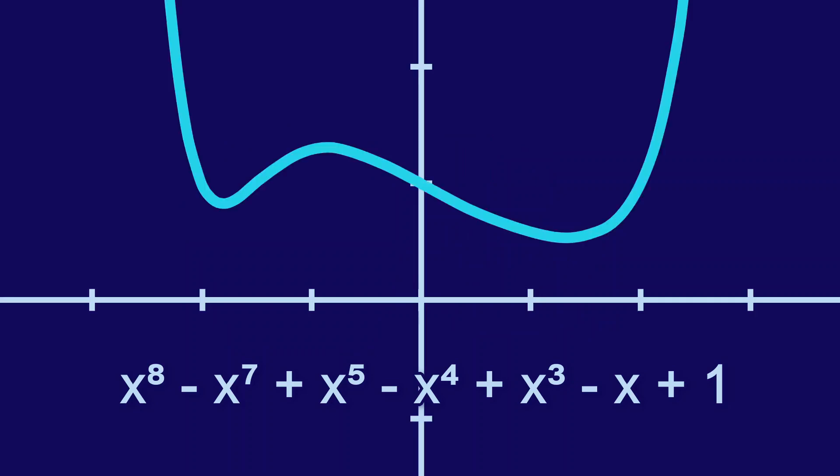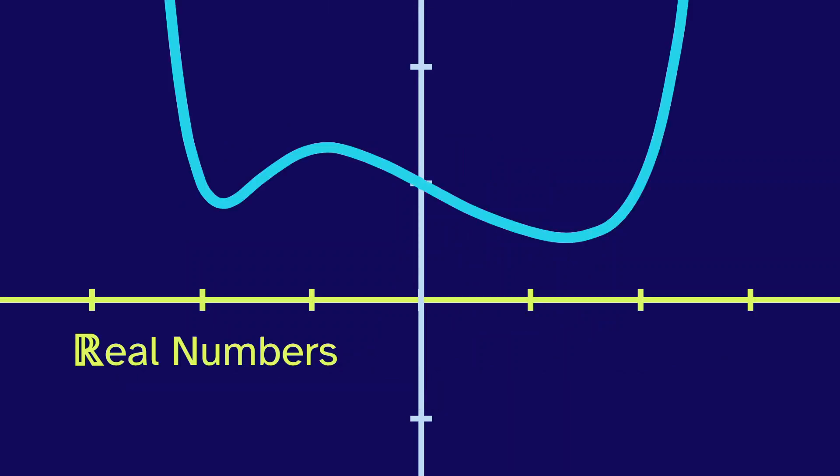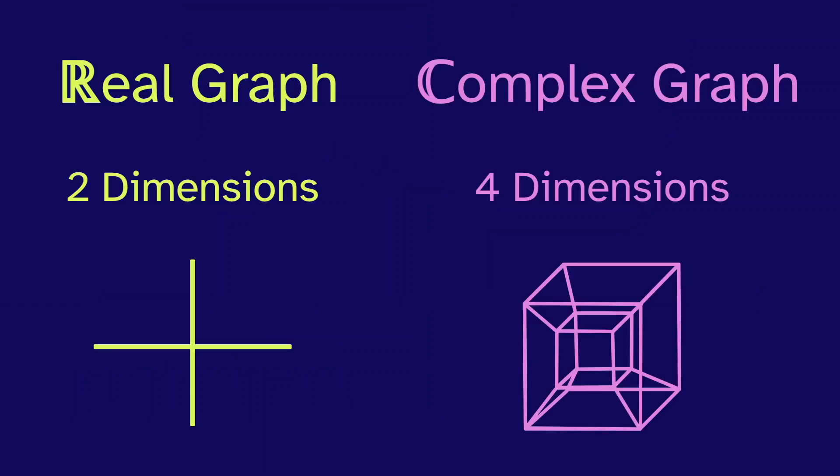This more typical view shows all of the real numbers as inputs, but not the complex numbers. And for this polynomial, the complex numbers are a lot more interesting. But graphing them in the same way would require four dimensions. So we need a different way to display.